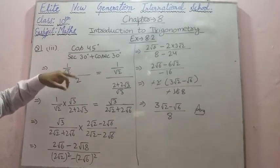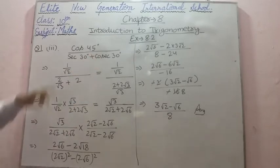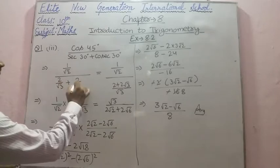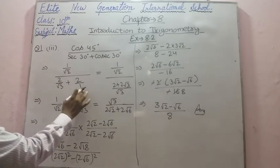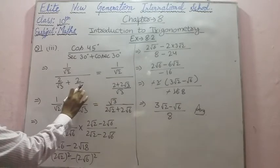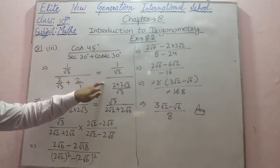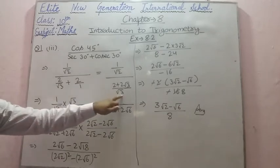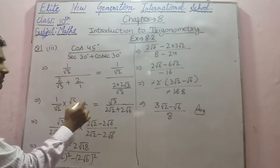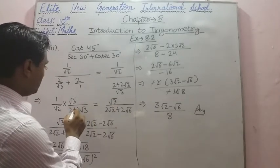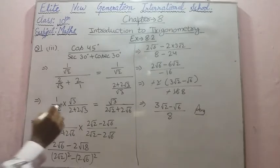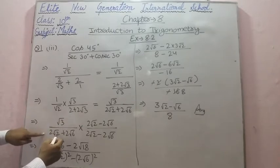The third part: cos 45° / (sec 30° + cosec 30°). Putting values: cos 45° = 1/√2, sec 30° = 2/√3, cosec 30° = 2. Solving the denominator: taking LCM of √3 and 1 gives (2 + 2√3)/√3. Taking reciprocal, the expression becomes (1/√2) × (√3/(2 + 2√3)), which simplifies to √3 / (√2 × (2 + 2√3)) = √3 / (2√2 + 2√6).